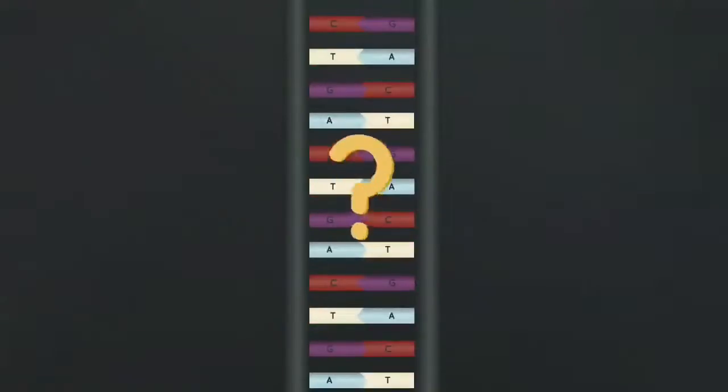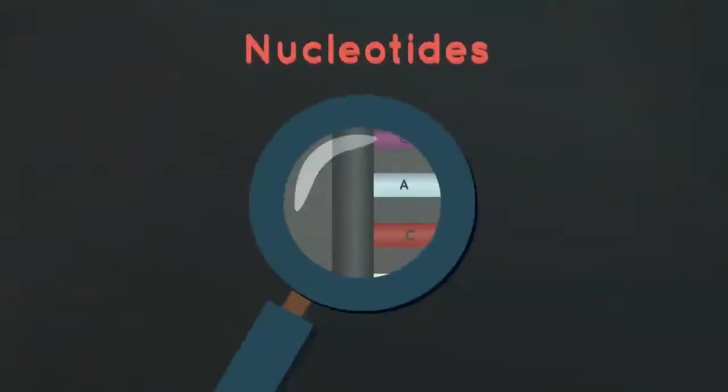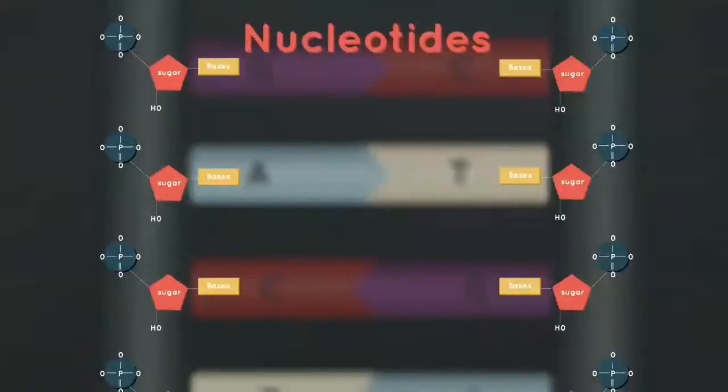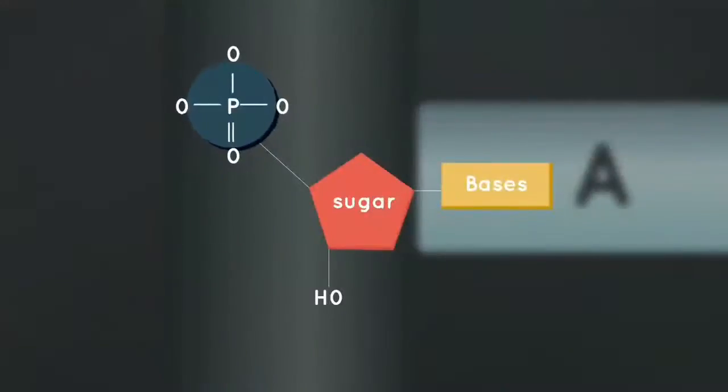But what is DNA made up of? DNA is made up of lots of molecules called nucleotides. DNA is a polymer because it is a large molecule composed of repeated subunits, the nucleotides. Each nucleotide contains a phosphate group, a sugar group, and a nitrogen base.